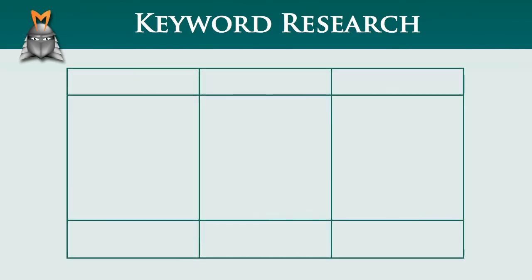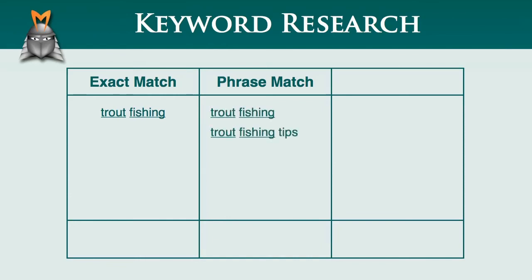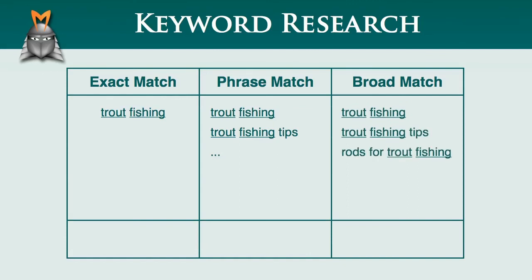So let's just quickly recap what we've covered in this video. We've seen that exact match data relates to how many people are searching for a specific keyword phrase, such as trout fishing. Phrase match data, on the other hand, relates to how many people are searching for a keyword phrase in a specific word order that may include other keywords. Some examples were trout fishing or perhaps trout fishing tips. Also, we saw that broad match data relates to how many people are searching for keywords in any order that may be included with other keywords, such as trout fishing, trout fishing tips, rods for trout fishing, fishing lures for trout, fly fishing for trout, and many others.